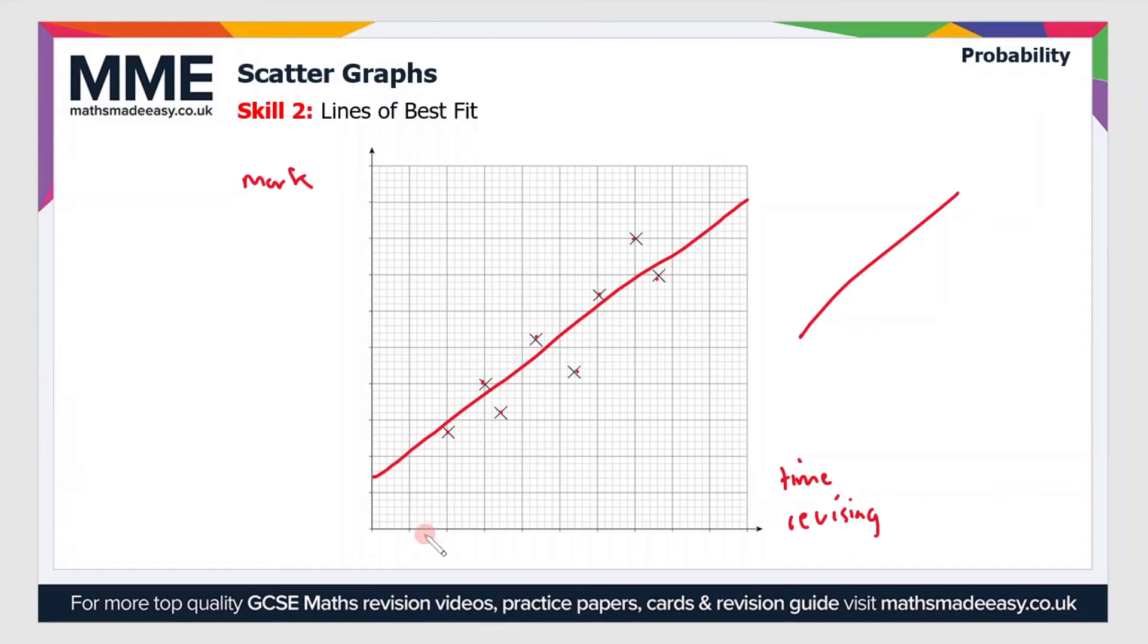Now a line of best fit is a really useful tool. These axes don't have any labels, but let's just put some in. Let's say this time spent revising is measured in hours, points at two, four, six, eight, and ten. And then let's say the mark is out of a hundred, so that'd be 80, that'd be 60, that'd be 40, that'd be 20, and so on.